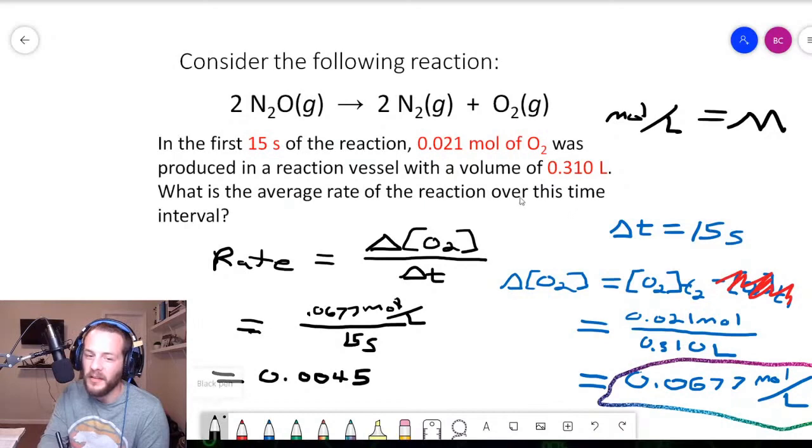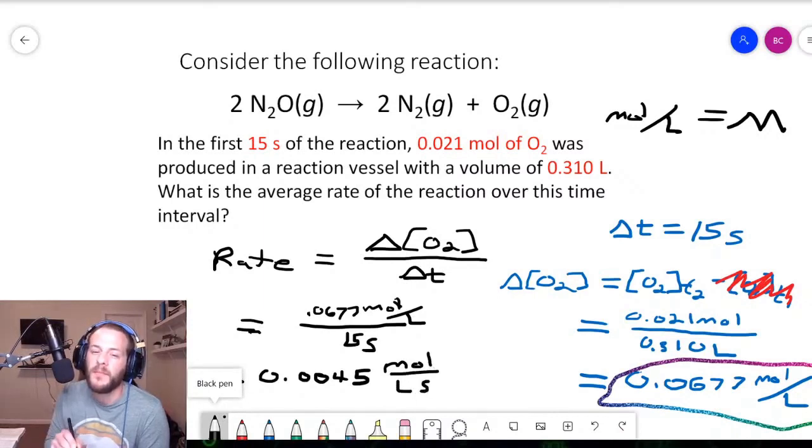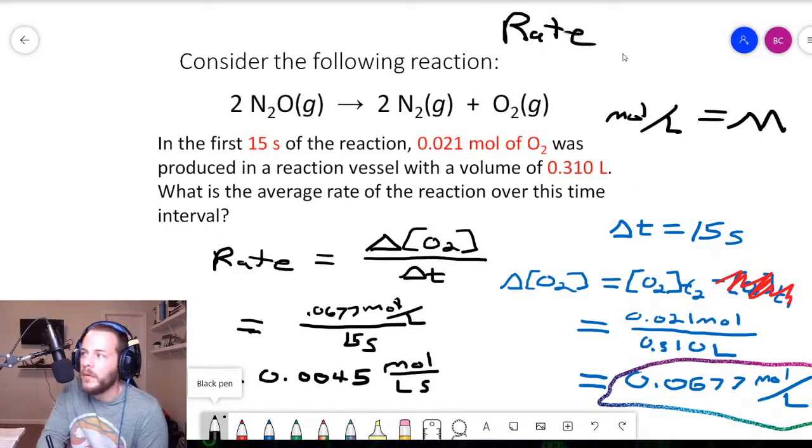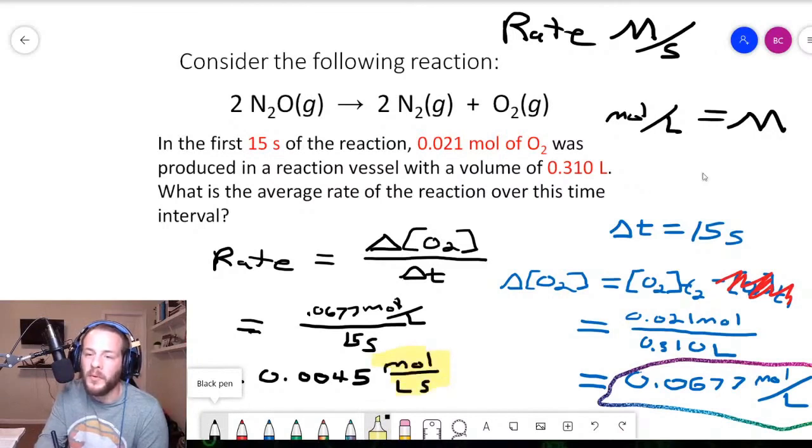In this case, the unit of the rate is going to be moles per liter per second. Now that's kind of a clunky unit to have to write all the time. And so oftentimes people will use the term, I'll just put a rate up here, is going to be equal to, or the units of rate rather, are going to be molar per second. So I'm just going to highlight this real quick. Okay. So moles per liter per second and molar per second, those are equivalent because moles per liter is equivalent to molar.